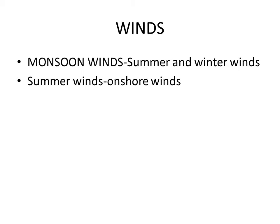During winter, the continent cools rapidly and a high pressure is formed in the interior. Air pressure is lower over the Indian Ocean in the south because the ocean is warmer than the land. Cold dry winds blow from the interior of the continent towards the ocean — these are winter monsoon winds. Monsoon winds exhibit a complete reversal in direction between seasons: summer winds are onshore winds and winter winds are offshore winds.